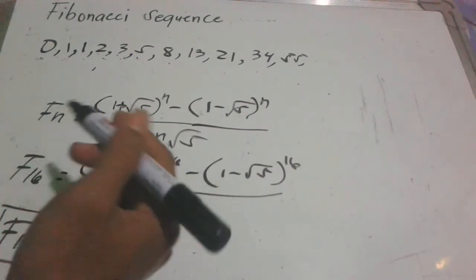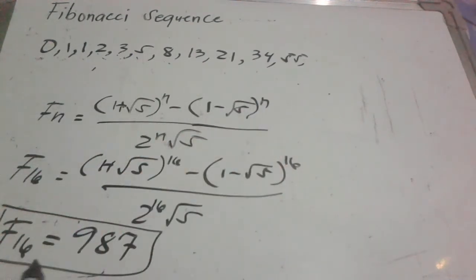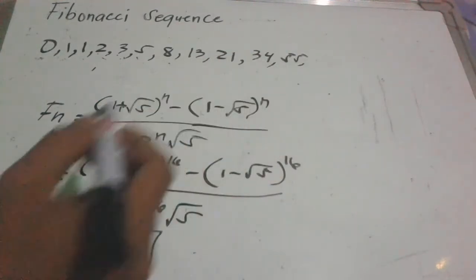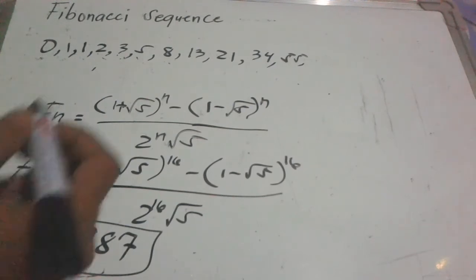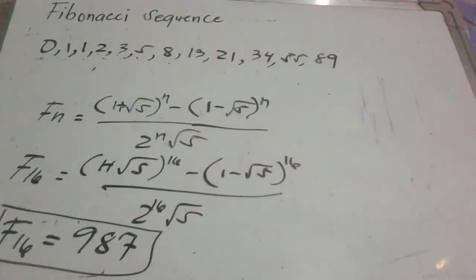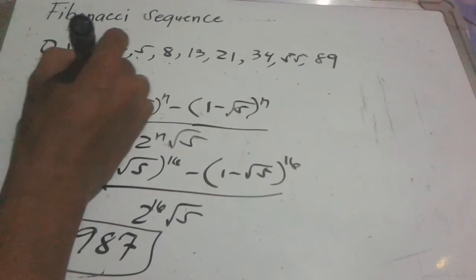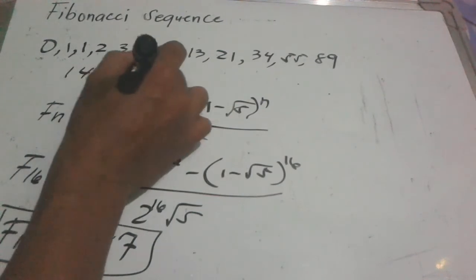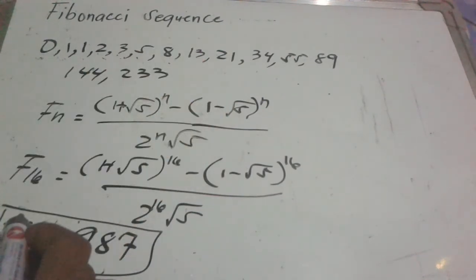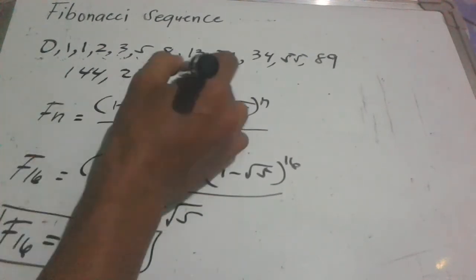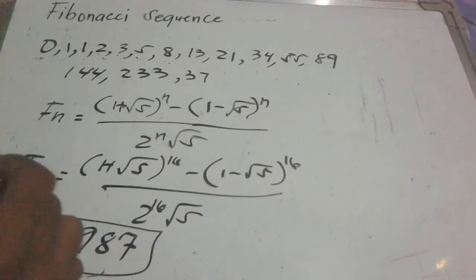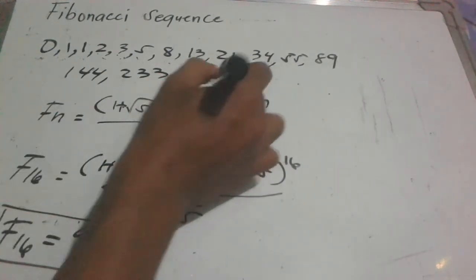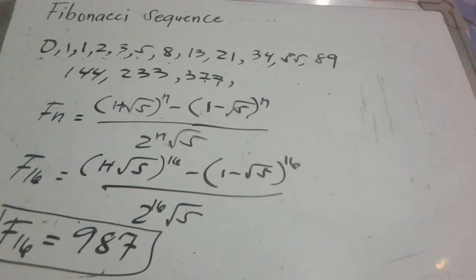We can verify this by continuing the sequence. Continuing from 55: 34 plus 55 is 89, 55 plus 89 is 144, 89 plus 144 is 233, 144 plus 233 is 377, 233 plus 377 is 610.